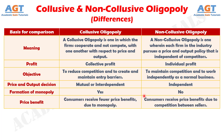Difference No. 6: As collusive oligopoly leads to the creation of a monopoly, consumers receive less benefit, as the products are offered for sale to the consumers at the same price by all the sellers. Whereas, in a non-collusive oligopoly, monopoly does not exist, which results in competition among the seller firms, and so the consumers get price benefits.